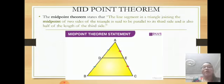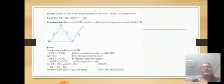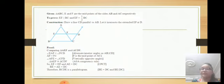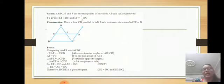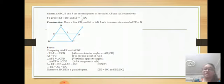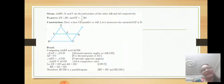Now we will go to prove that theorem. In this figure, ABC is a triangle where E and F are the midpoints of AB and AC. Given: ABC is a triangle where E and F are the midpoints of sides AB and AC respectively. We have to prove that the line segment joining these two midpoints is parallel to the third side BC and half of BC. Construction: draw a line CD parallel to AB, let it intersect the extended EF at D.